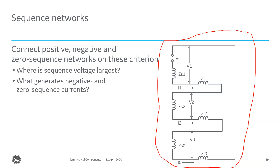These three sequence networks interact differently for different fault types. For a phase-to-ground fault, my metering location sits within those networks. The voltage is largest in the positive sequence network right across the voltage source. My fault location is where these networks connect. As I get closer to the fault electrically, my negative sequence voltage increases while my positive sequence voltage decreases. My zero sequence voltage also increases as I get closer to the fault.